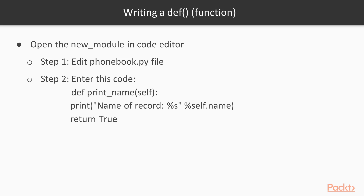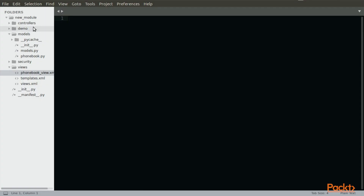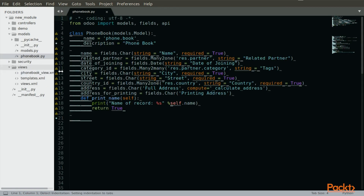What we need to do is to open the new module that we have written before and have worked on. We need to open it in the code editor. We are going to edit the phonebook.py file and then we are going to enter this code, so pause this video and write it in the phonebook.py.